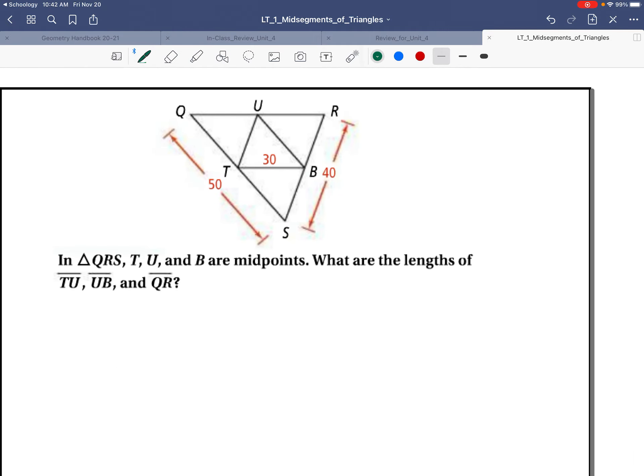Let's look down here. Here we have a triangle. T, U, and B are midpoints. What are the lengths of TU, UB, and QR? TU is right here, and we're given that it's at the midpoint.